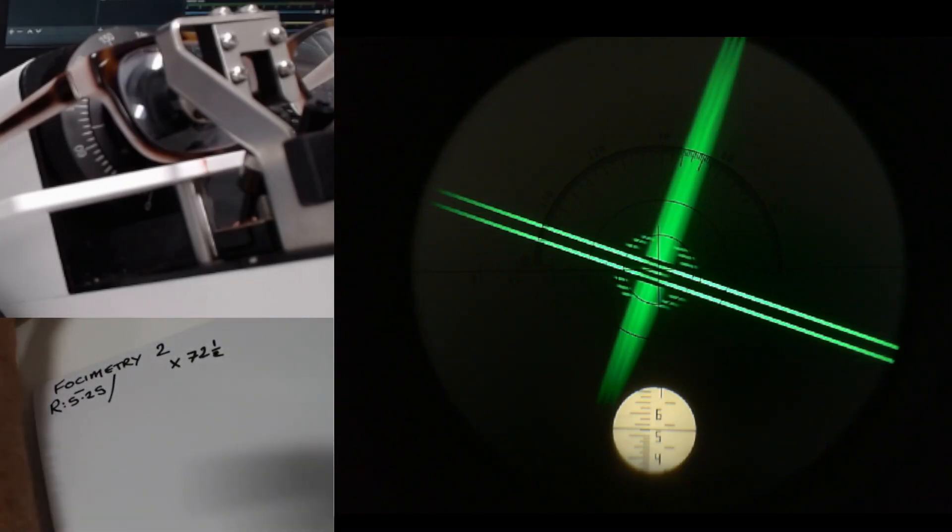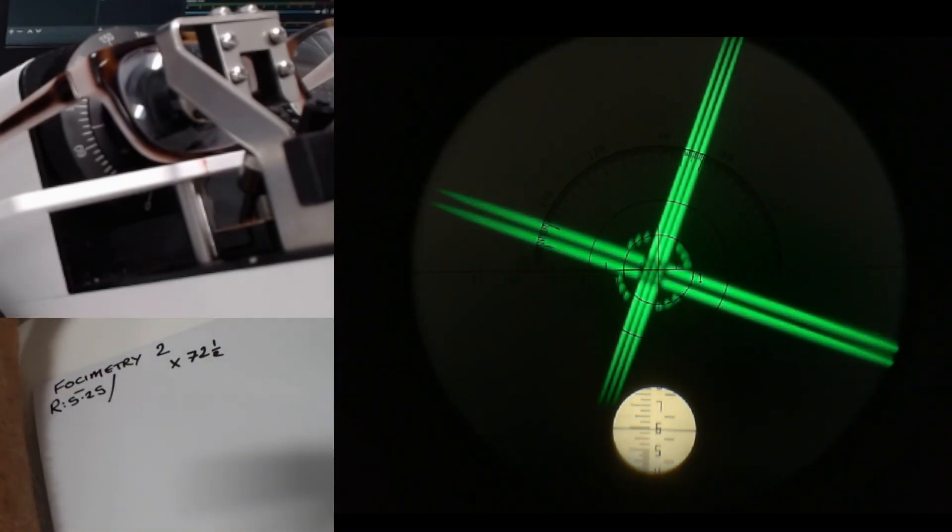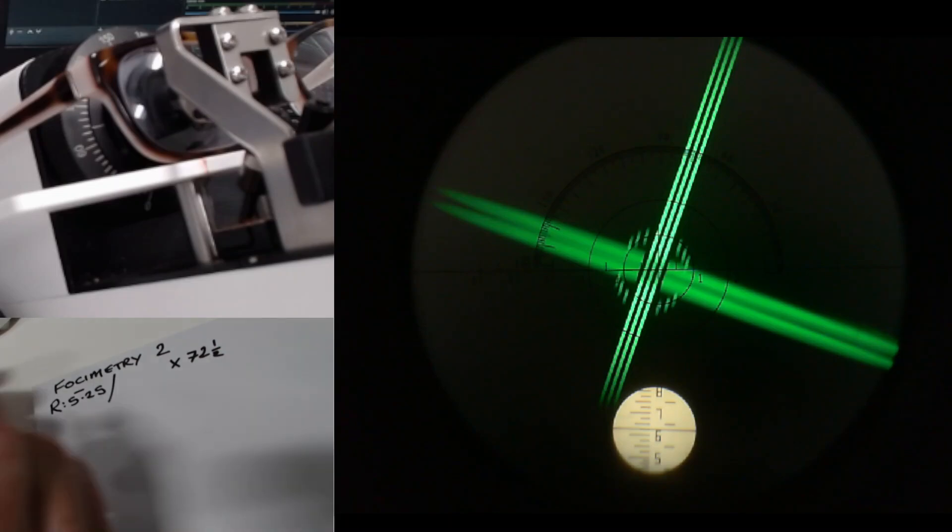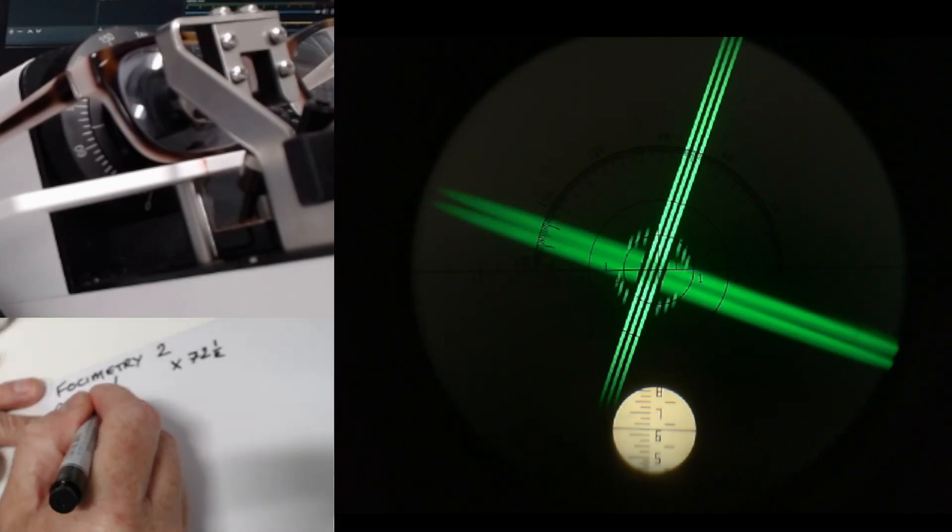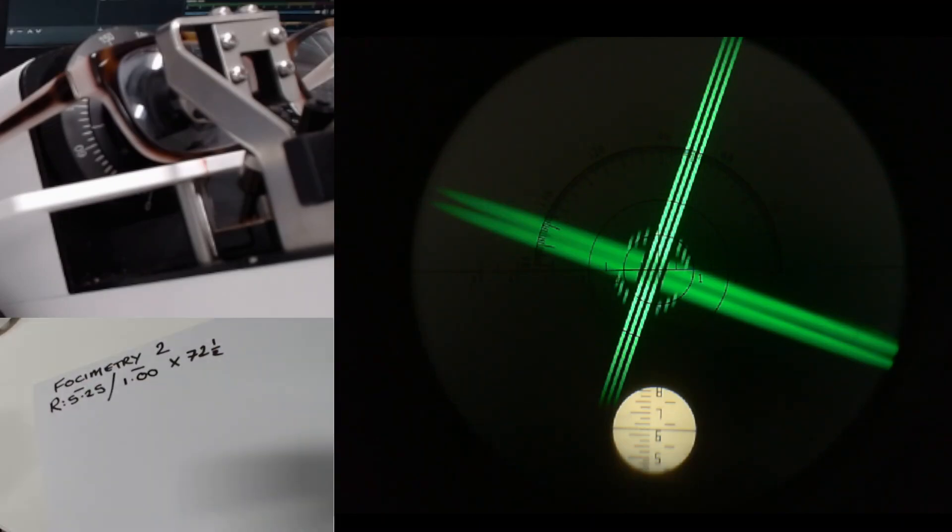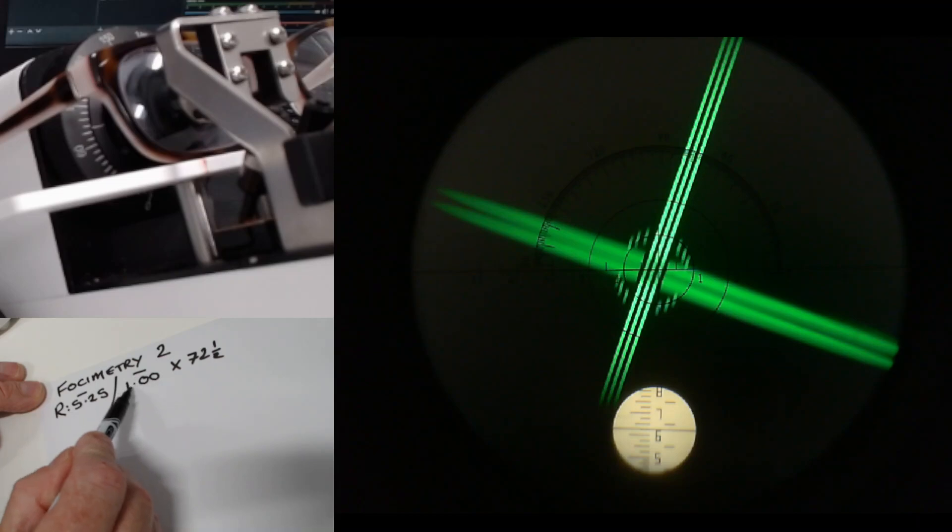And I'm going to keep winding the power towards the minus end of the scale. And that is minus 6.25. We've gone from minus 5.25 to minus 6.25. The difference between those two readings is minus 1. So we've got a prescription there of minus 5.25, minus 1, axis 72.5.